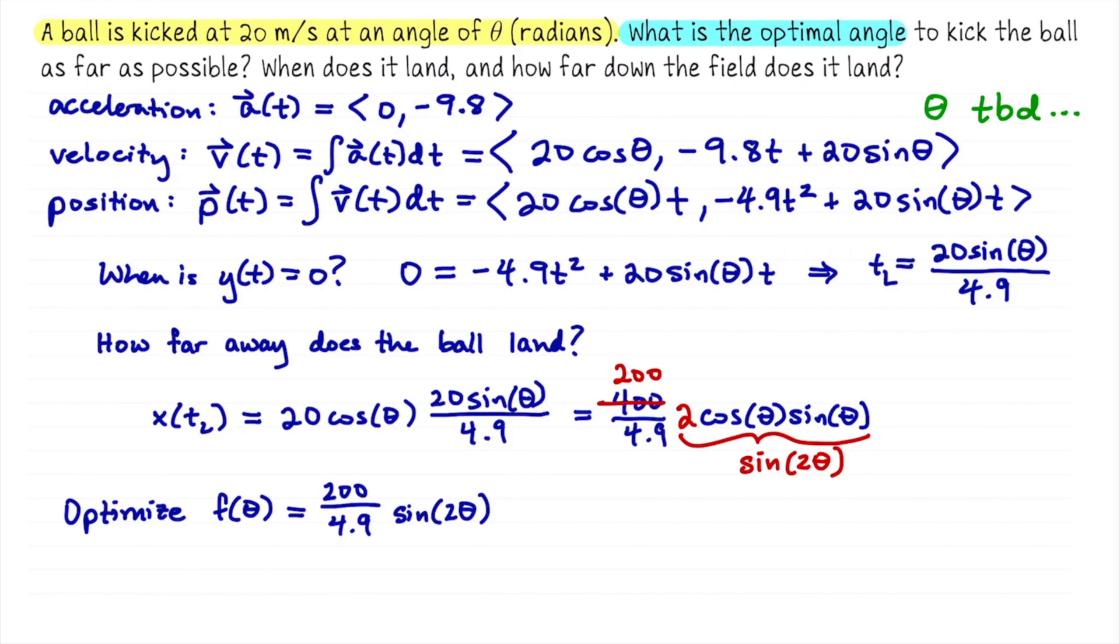So let's compute f prime of theta. That's going to be 200 divided by 4.9 times cosine of 2theta times 2 because of the chain rule. To find critical points, we want to know when this is zero. And that expression is going to be zero whenever cosine of 2theta is zero.